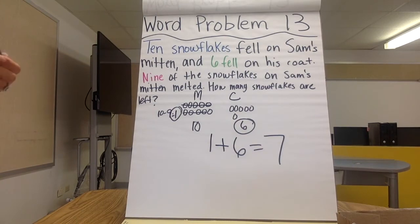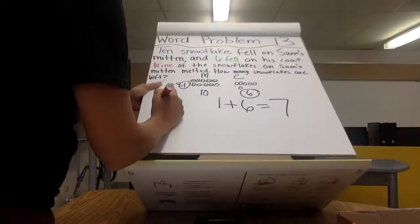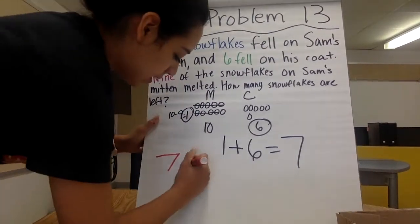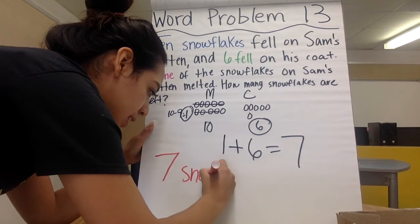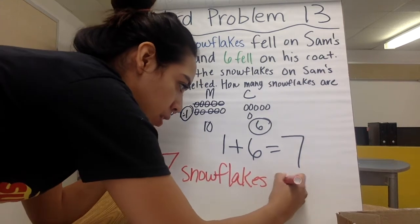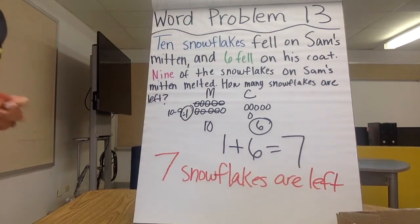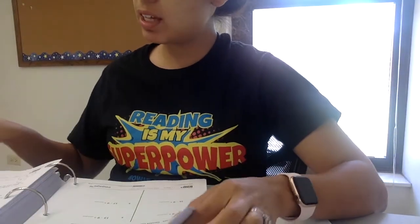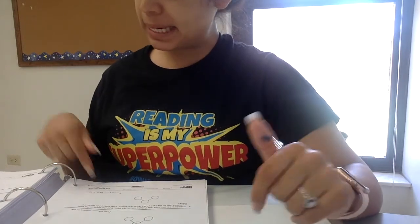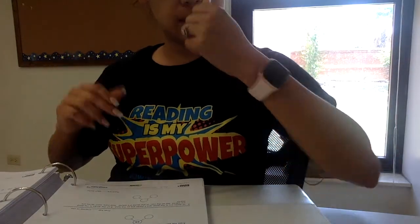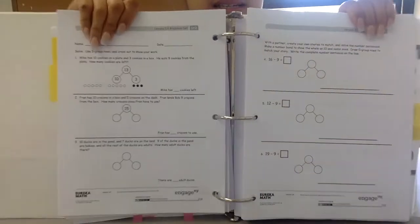How many snowflakes are left? Seven snowflakes are left. Now that we've finished with lesson 13 word problem, let's check mark it. Parents, don't forget to work on the problem set with the students — lesson 13 problem set, which you'll find on pages 214 and 215, questions one to six. After that, you have finished with week three, day three of math.